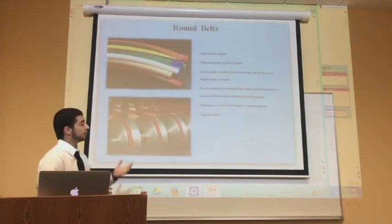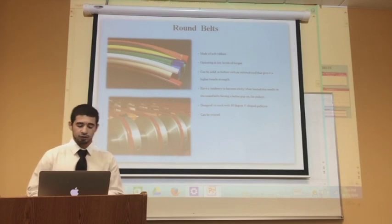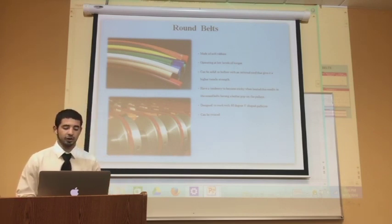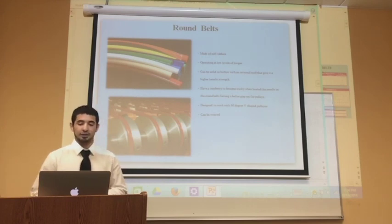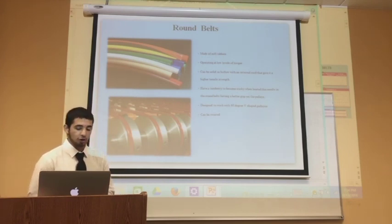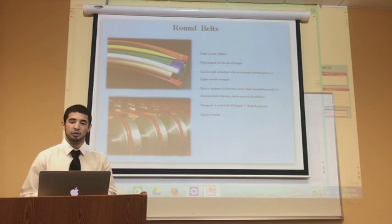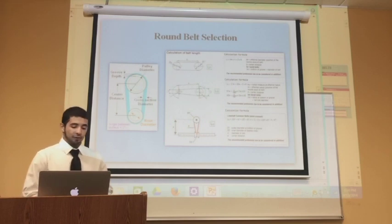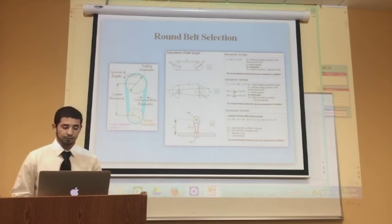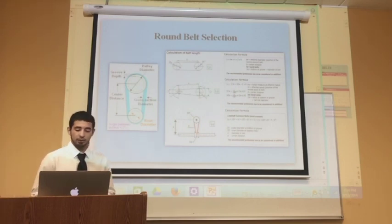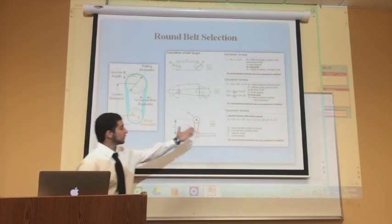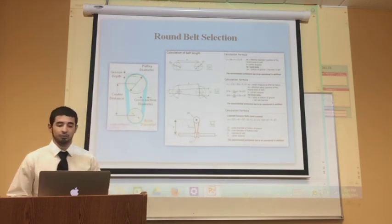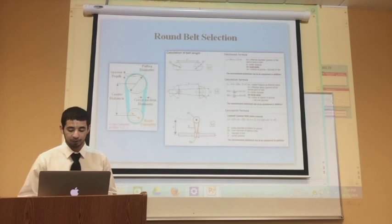Round belts are essentially symmetrical rubber tubes that operate at low levels of torque. These belts vary in size and material, and some even come with an inner core that gives them greater tensile strength. When selecting the right round belt, figuring out the proper belt length is crucial. Depending on the design parameters available, one of the provided equations can be used to calculate the proper belt length needed for the application.